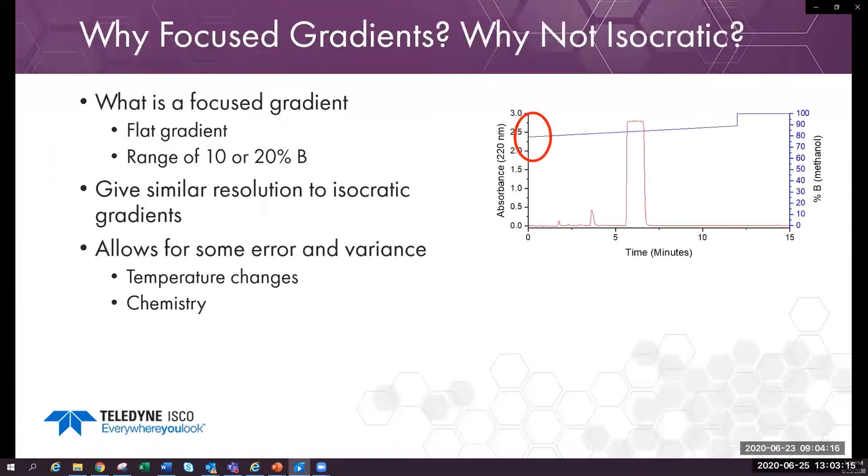A focused gradient is flat, and there isn't much difference between the starting solvent composition and the ending solvent composition. The range is usually 10 or 20 percent B. Such a shallow gradient provides a similar resolution to that of an isocratic run.